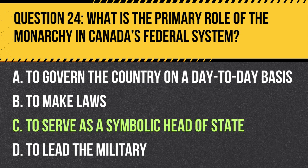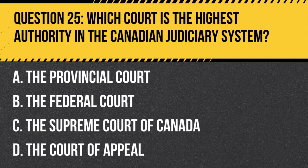Answer: C. To serve as a symbolic head of state. The monarchy in Canada plays a ceremonial role and serves as a symbol of continuity and the legal underpinnings of the executive, legislative, and judiciary branches.